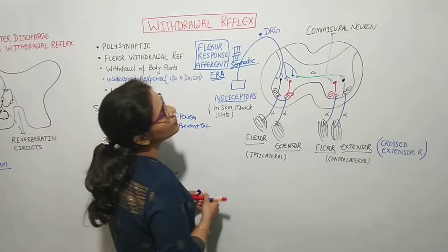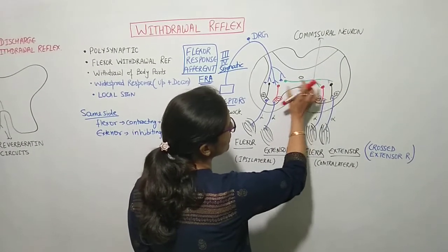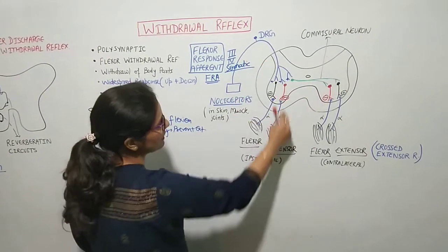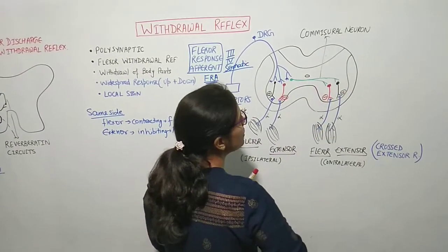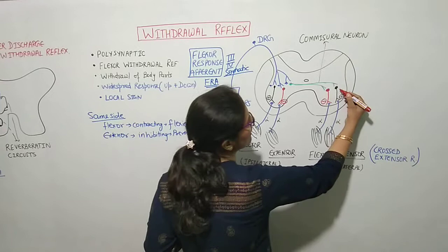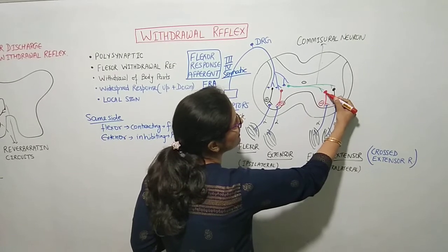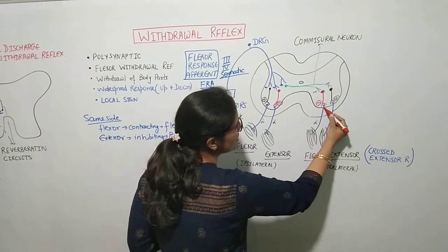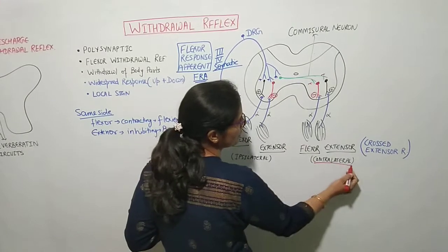There is also a commissural inter-neuron that crosses to the opposite side. If the stimulus is mild it may only affect the same limb, but if the stimulus is stronger, it crosses to the opposite side through commissural neurons. On the opposite side, excitatory inter-neurons activate the extensor muscles while inhibitory inter-neurons suppress the flexor muscles.